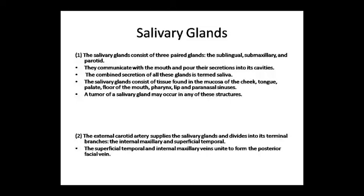The external carotid artery supplies the salivary gland and divides into terminal branches. These terminal branches are the internal maxillary and superficial temporal arteries. The internal maxillary veins unite to form the posterior facial vein. So, the parotid gland has a carotid artery supply which divides into terminal branches: internal maxillary and superficial temporal.